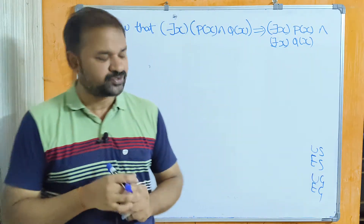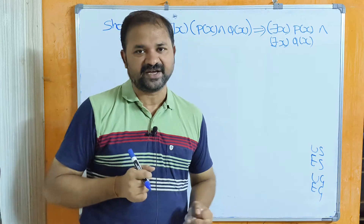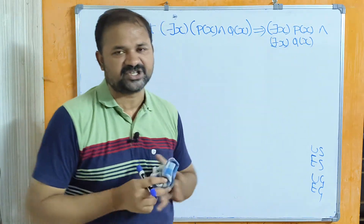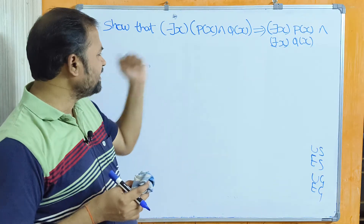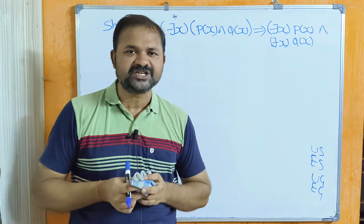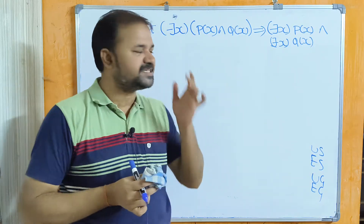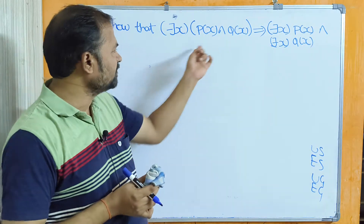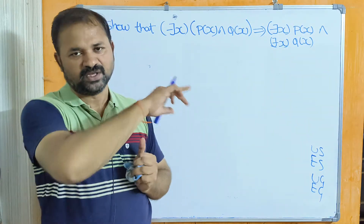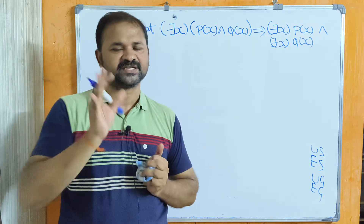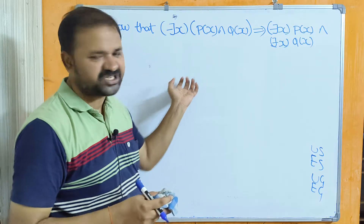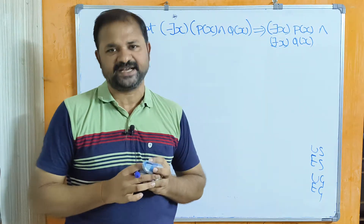Here this is LHS and this is RHS. We can take LHS and prove it as RHS, or we can take RHS and prove it as LHS, or simplify both LHS and RHS. If we get a common value for both LHS and RHS we can say those two are equal.